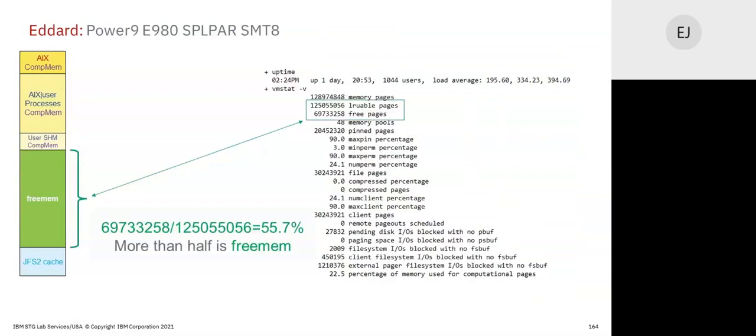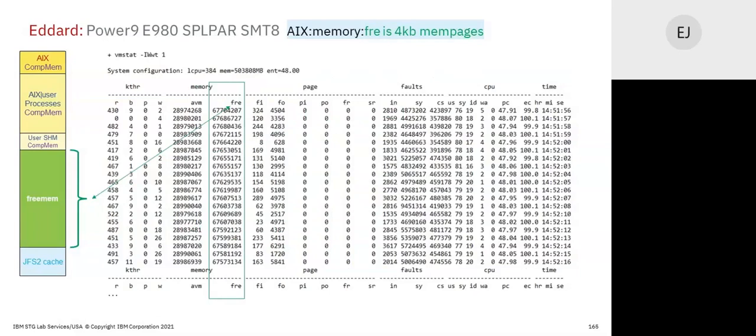Free memory at 55 percent — there's a whole lot of memory free. Free memory is bigger than computational memory. Either you've got a very small workload, a very big LPAR, or your application is upside down. I like writing this syntax because it tells me so much — I call it the matrix effect. By digit count per column, when you memorize the column and understand the personality, you begin to have understanding from these numbers, not unlike the Matrix showing reality.